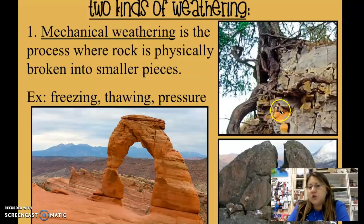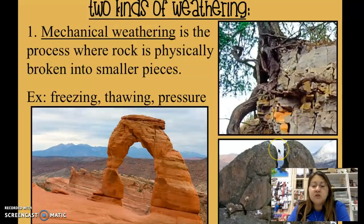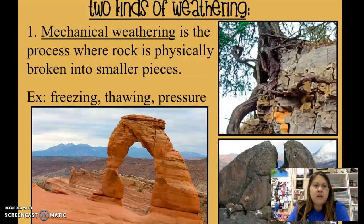Ice wedging is shown here on the surface — this rock used to be together at one point. When water seeps into small fissures and openings in the rock and freezes, it expands. Over time, that expansion causes a large indentation, as you can see right here.